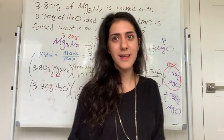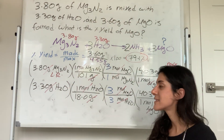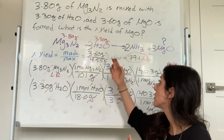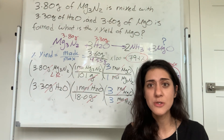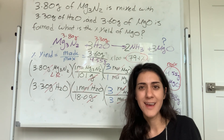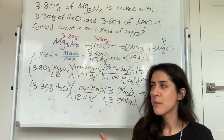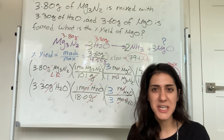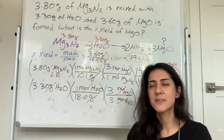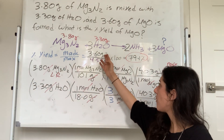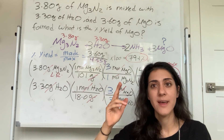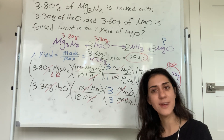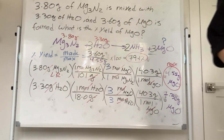This was a big lecture and we did a lot of practice problems. Percent yield is made over max. Just because this is the max you could make doesn't mean you'll actually make that amount in the lab, because accidents happen, there can be side reactions, and you lose some material when transferring. So this is how much you actually made over how much you could have made, times 100 — that is your percent yield. Nice job, we'll see you next time.